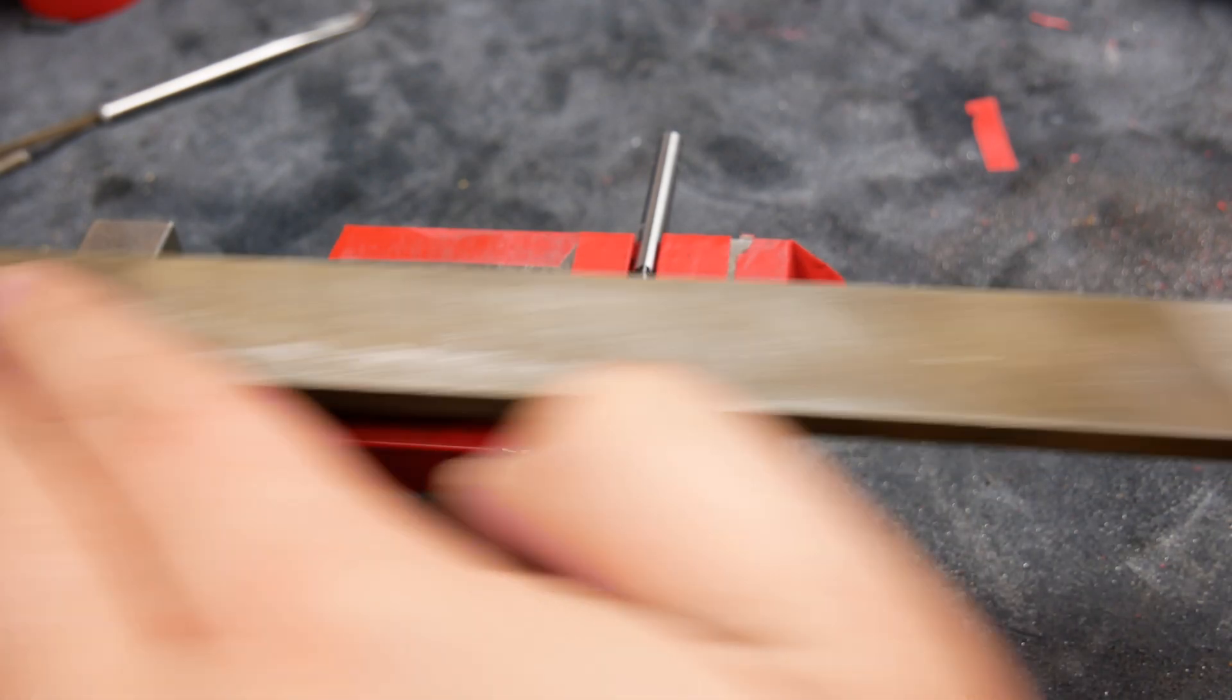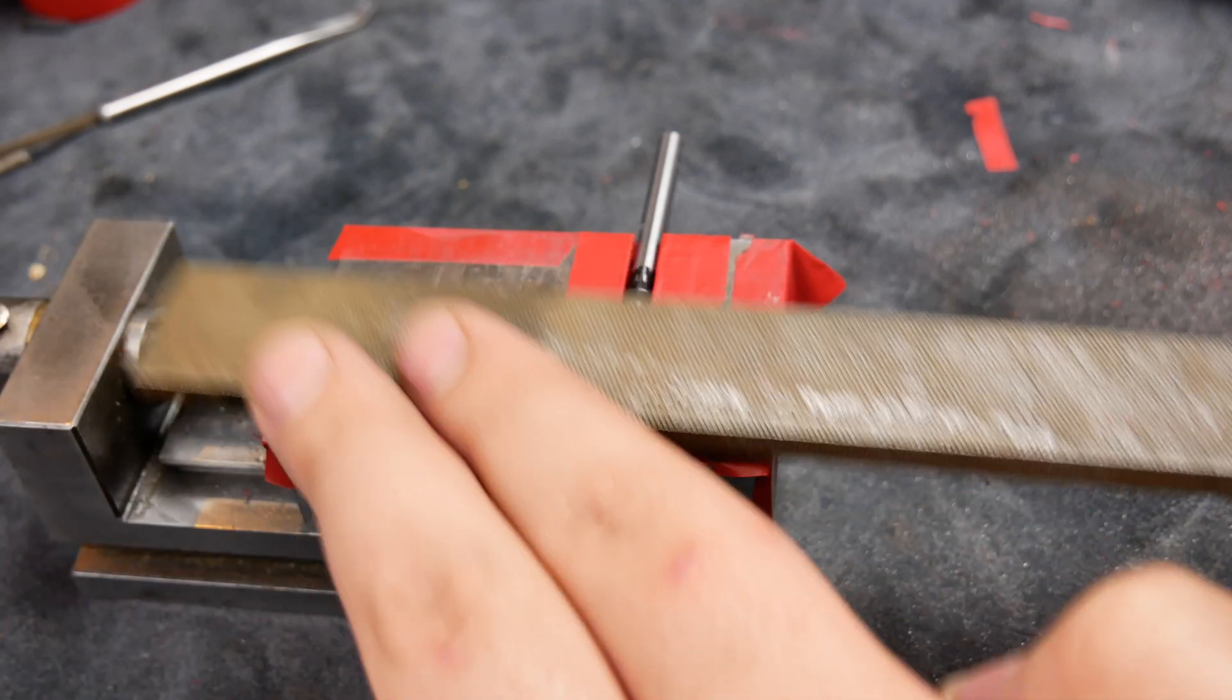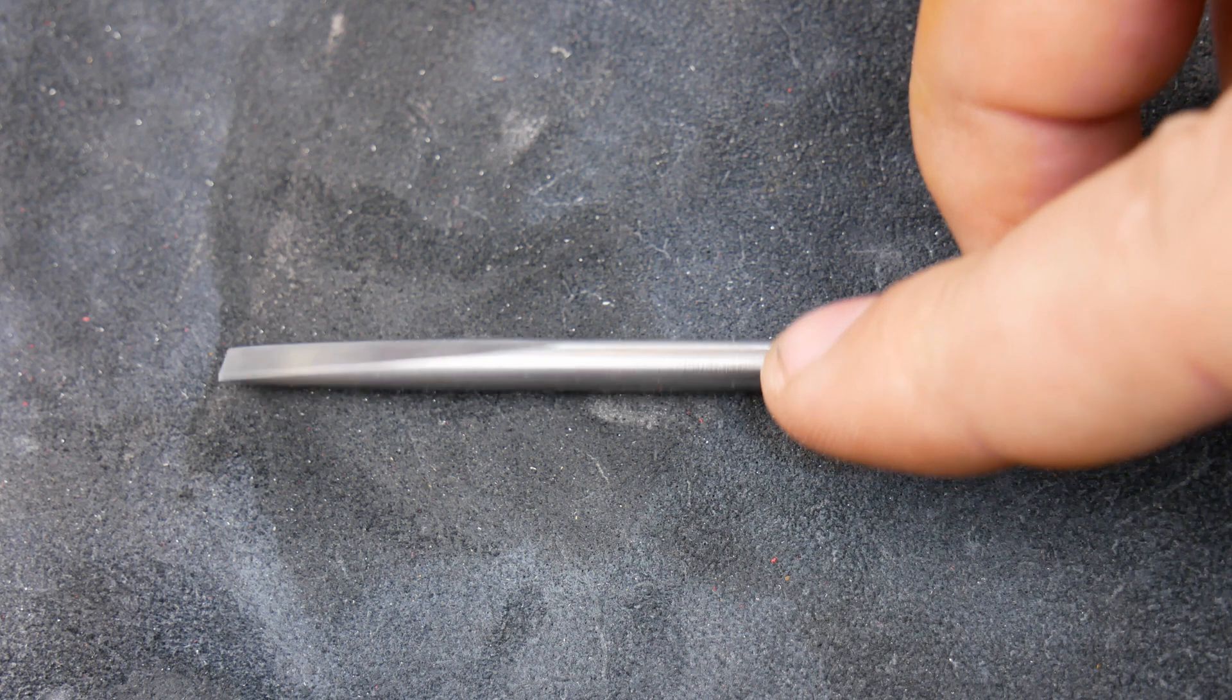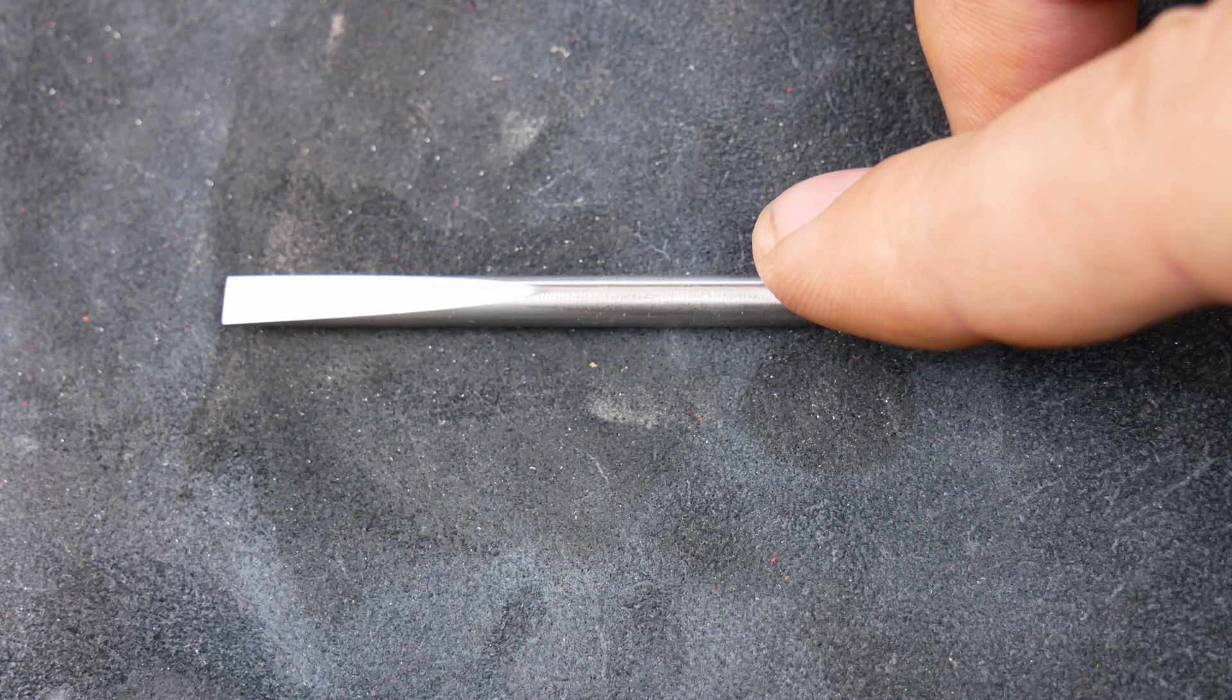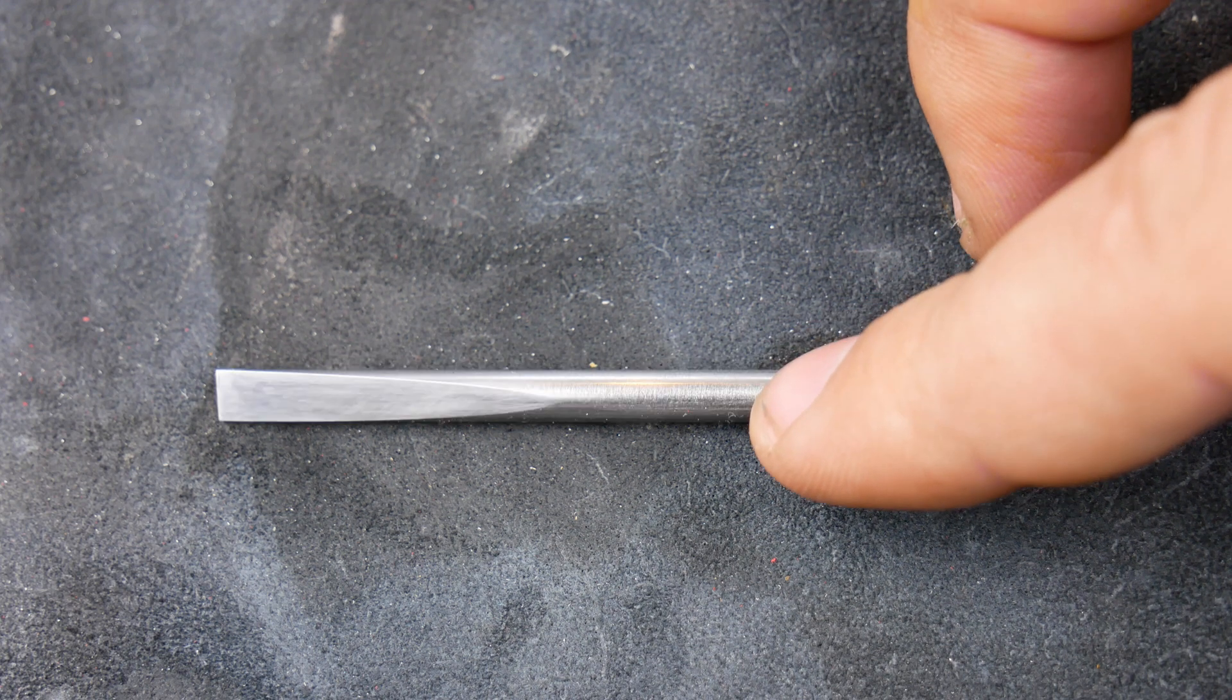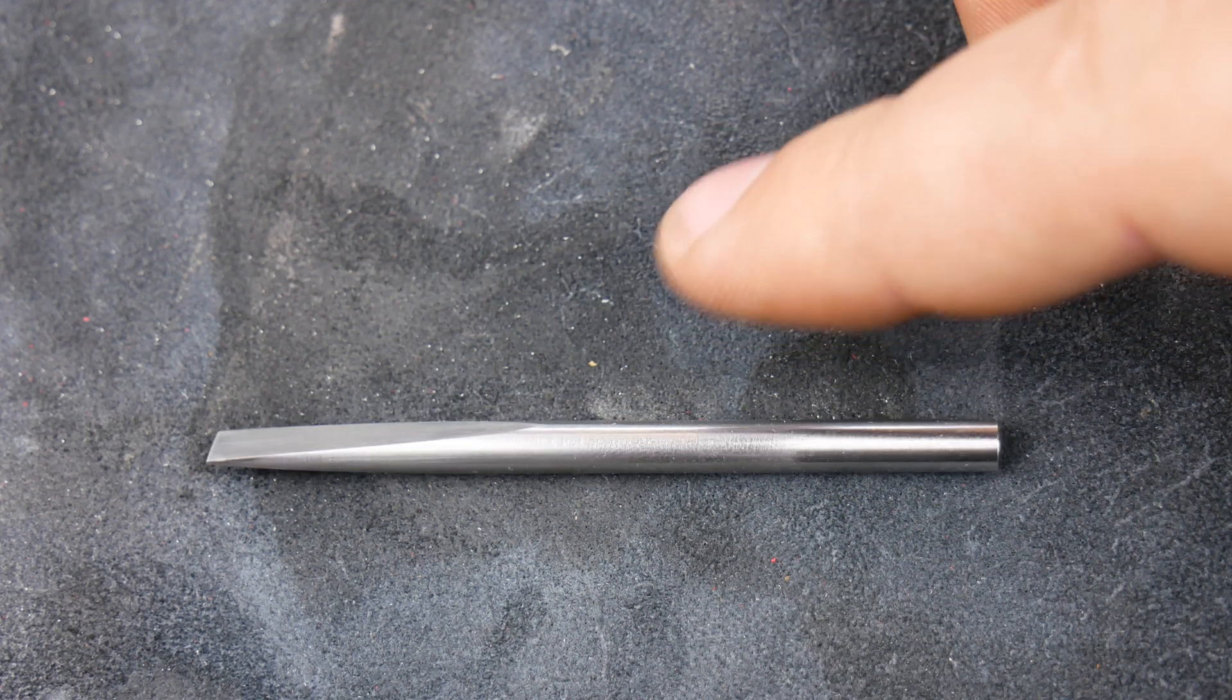So I lined everything up in the cross slide and repeated what I did before. Now to be honest, this isn't the most accurate of rigs, and it took me a couple of goes to get an even taper. But finally I got there, and I moved on to the bending. But if any of you guys know of a better way of doing this, please let me know in the comments.